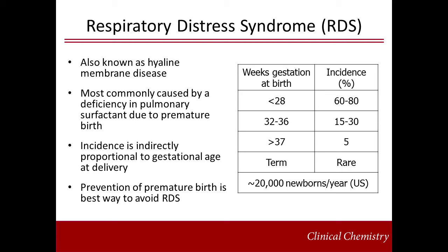Respiratory distress that occurs within the first few hours of life is referred to as newborn RDS, or hyaline membrane disease. It's most commonly caused by a deficiency in pulmonary surfactant due to premature birth. The pulmonary surfactants are needed to help reduce the surface tension in the alveoli of the infant lung and prevent the alveoli from collapsing. There are other more rare causes of RDS, including genetic defects that cause altered production of surfactant proteins.